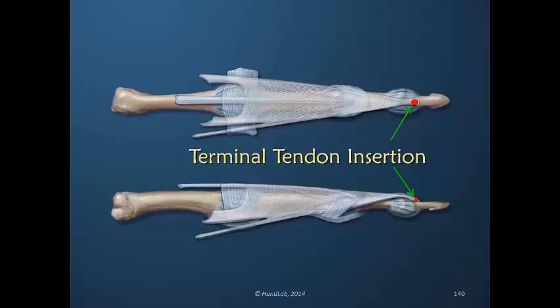Some power that is more direct, meaning via the lateral bands, provides more direct tension. Other power, as we've discussed, is reduced because as it comes out to the terminal tendon insertion, it must go in an indirect path and it loses some power by doing that.